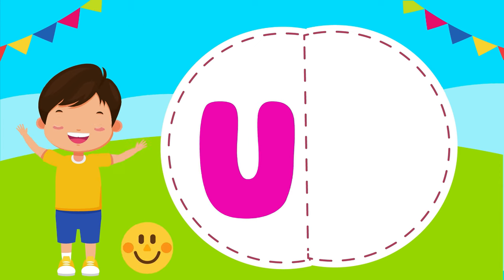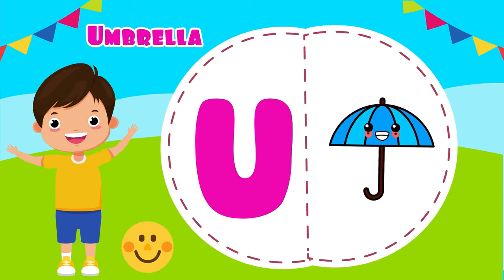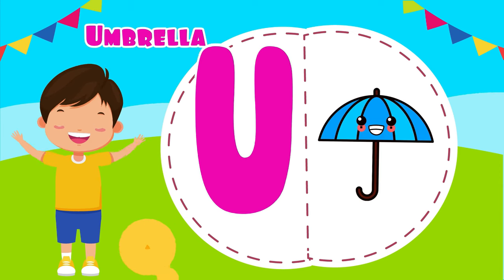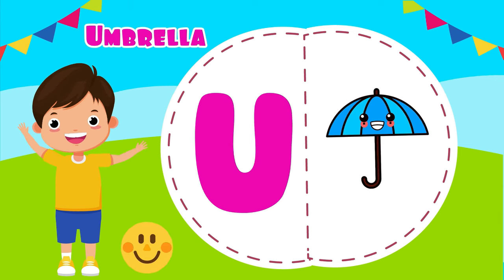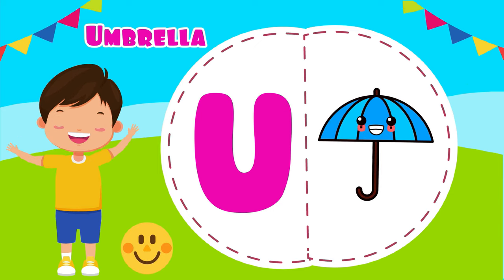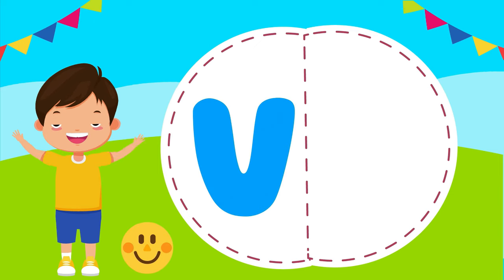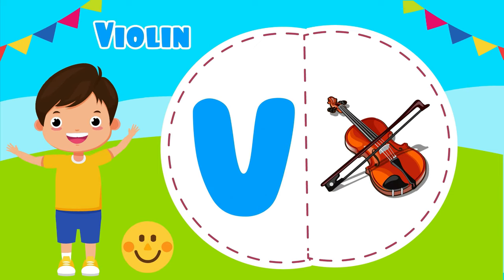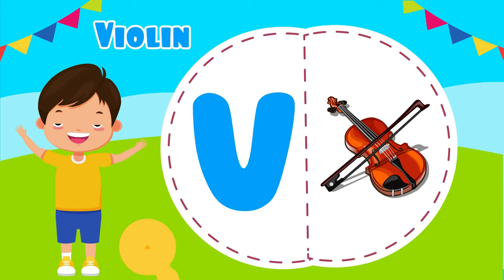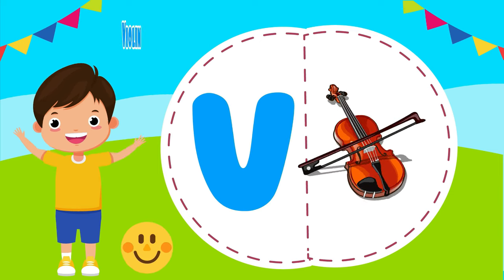U is for umbrella, u-u-umbrella. V is for violin, v-v-violin.